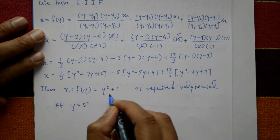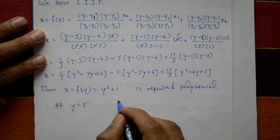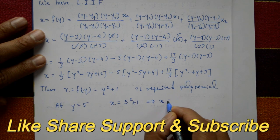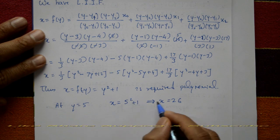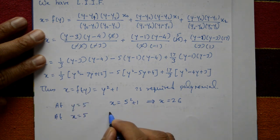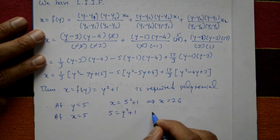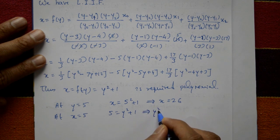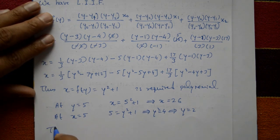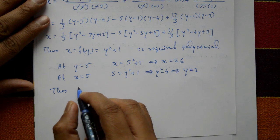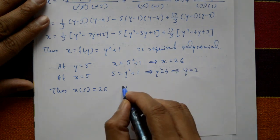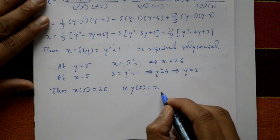Now finding x(5) and y(5): at y = 5, x = 5² + 1 = 25 + 1 = 26. At x = 5, we set 5 = y² + 1, giving y² = 4, so y = 2 (taking the positive value). Therefore x(5) = 26 and y(5) = 2. This is the required solution.